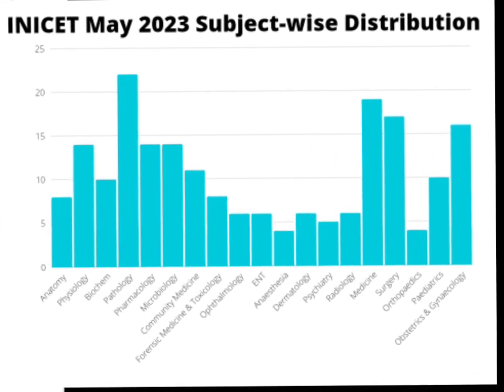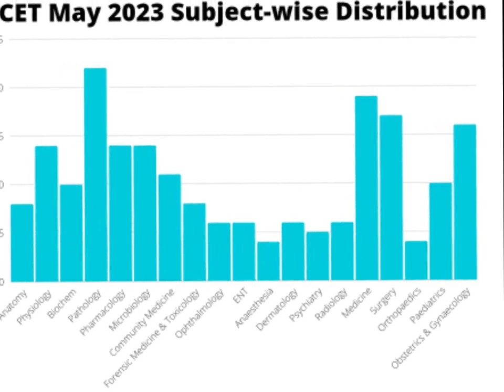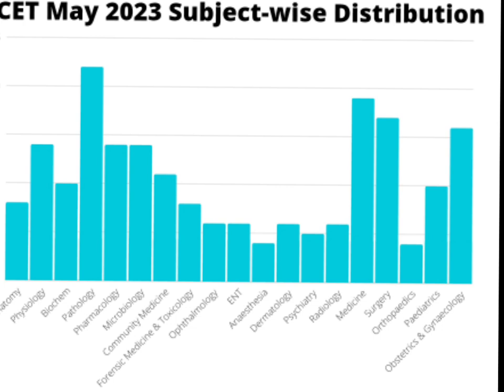However, this data can be slightly deceptive. You may infer that you need to pay the most attention to medicine, but medicine is a vast subject and takes a long time to study. The yield you get by spending a certain amount of time in medicine may be much lower than the yield from putting the same time into surgery. You need to make your own informed inference, and I'll be making more videos with other forms of data to give a clearer picture of how much time to spend on each subject.